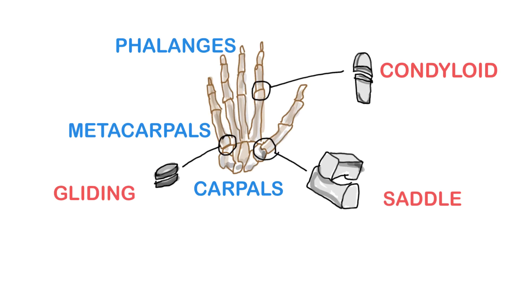Gliding joints. When bones have flat surfaces that glide against one another, they form gliding joints. These joints do not allow for circular motion, but can allow for some twisting movement. For example, gliding joints include the articulations of the wrist bones and the tarsals in the ankle.